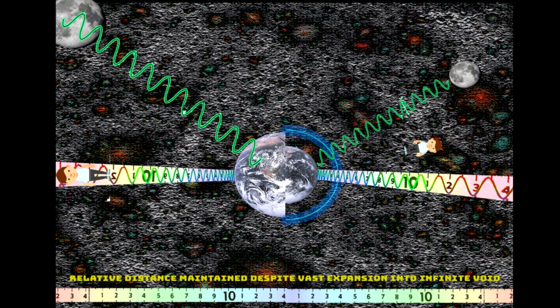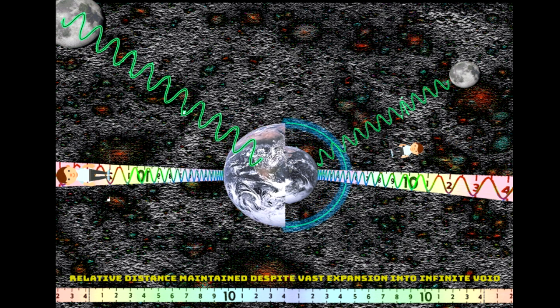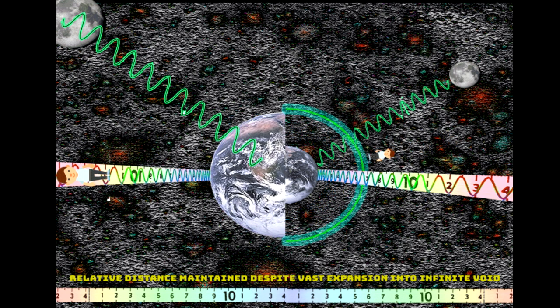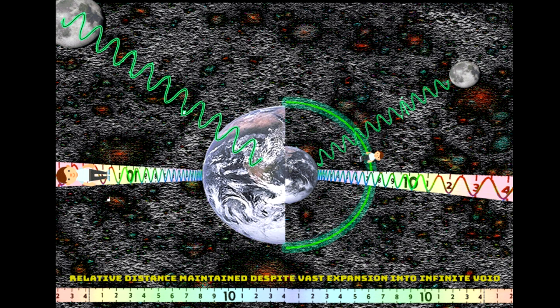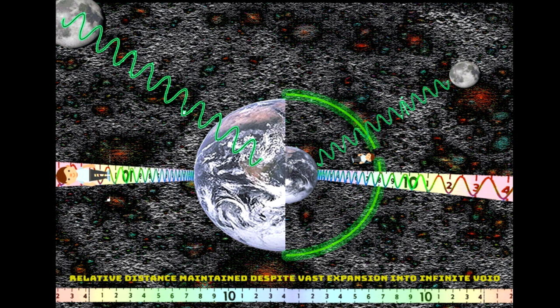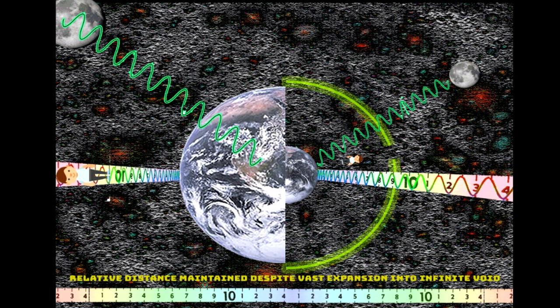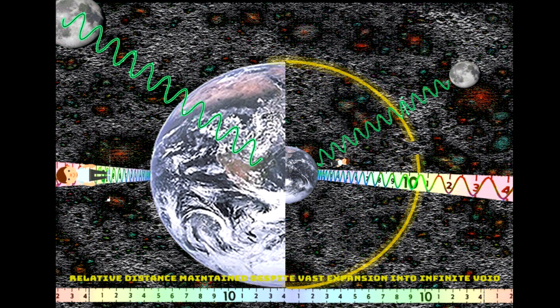This is Newton's third law of motion: the expansion force outward produces an equal and opposite reaction. Newton was a real scientist; Einstein is a fake.